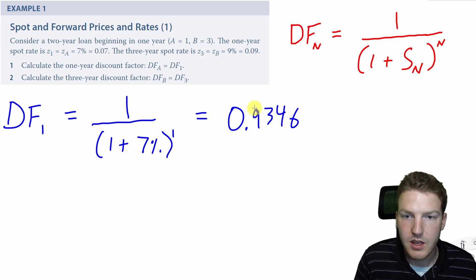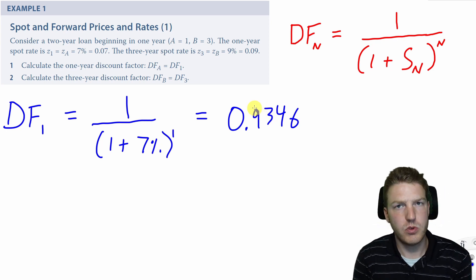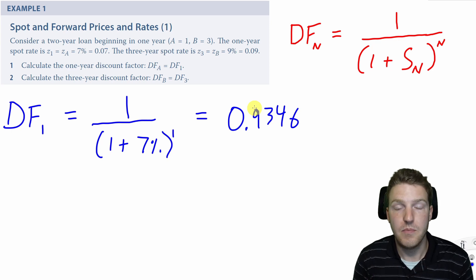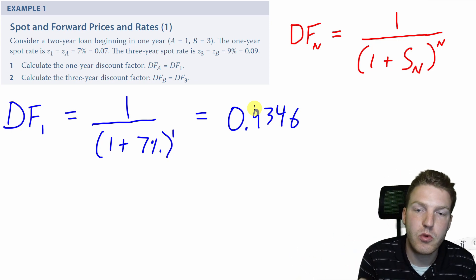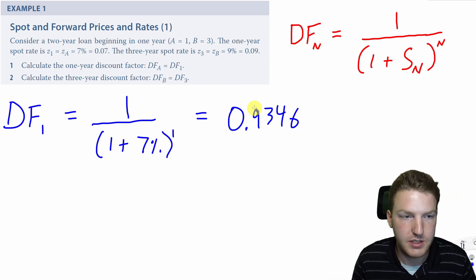So what this says is that if I wanted to be guaranteed to receive $1 in the future, one year from today, I would have to pay 93.46 cents to enter into that contract.